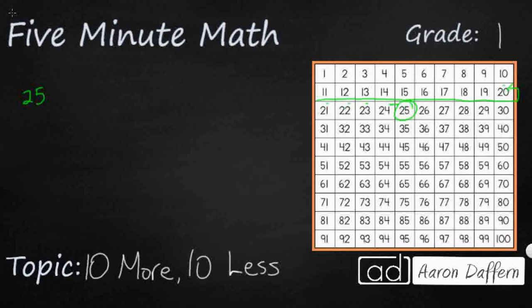So 5, 6, 7, 8, 9, 10. So 10 less than 25 is 15. I'm going to put that right here, right above it.